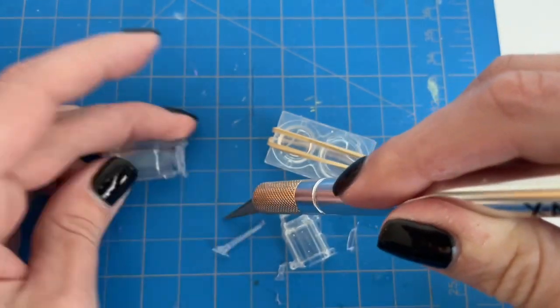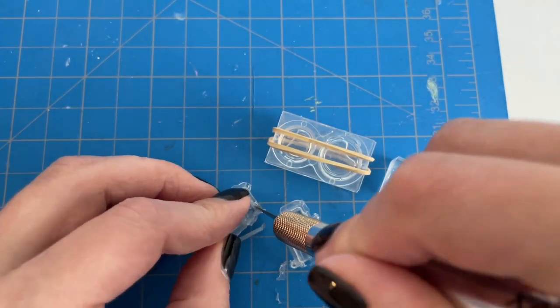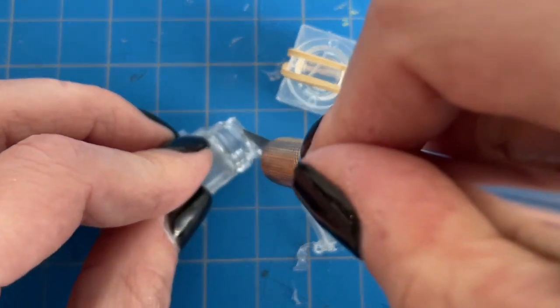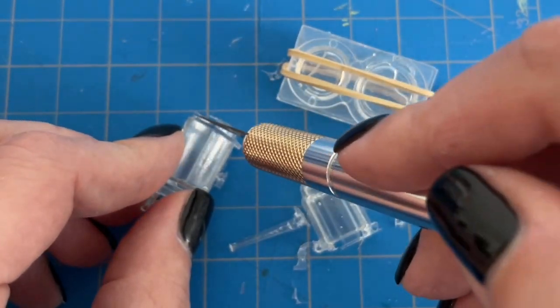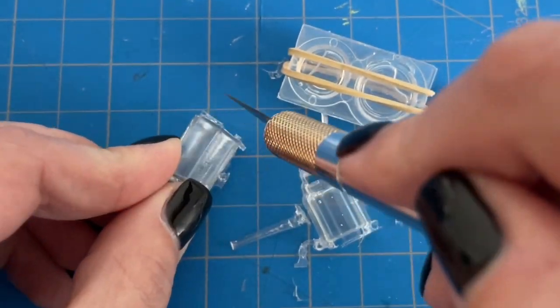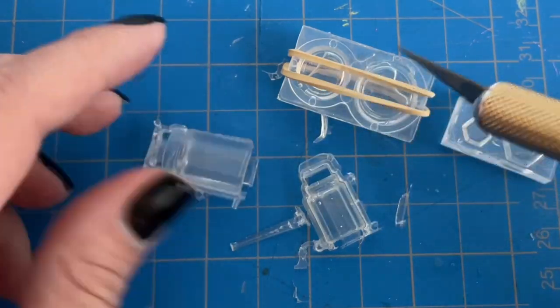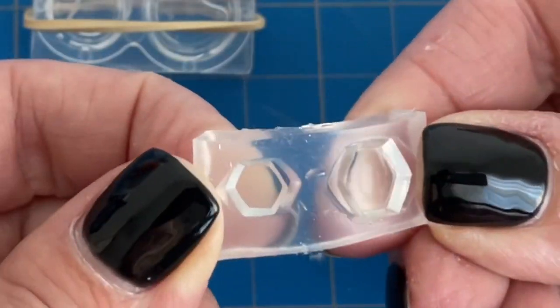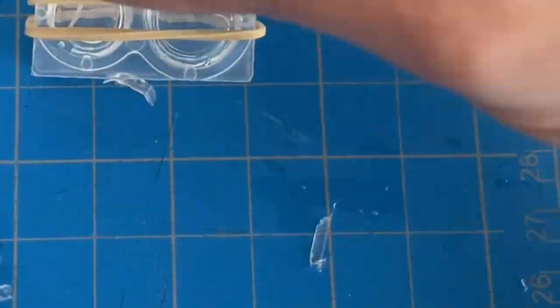I'm gonna use my exacto knife to cut off some of this extra resin. So far I'm not too happy with this mold. I wasn't sure how much resin I needed and I ended up pouring way too much resin than I needed. At least the bottoms turned out really nice.